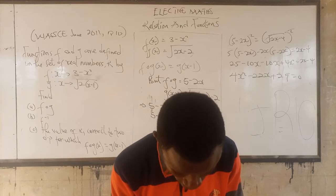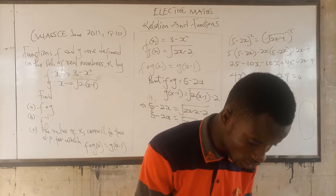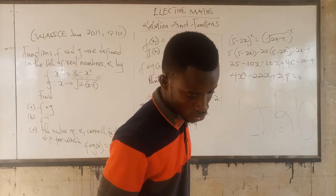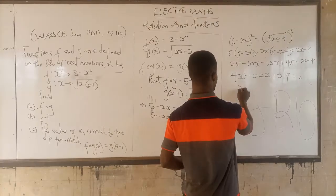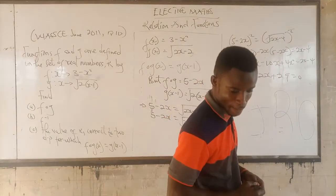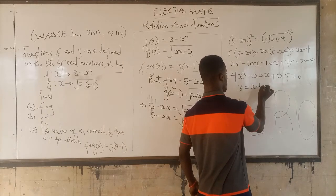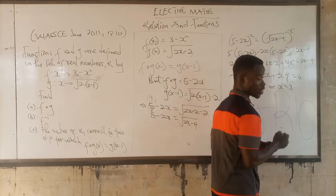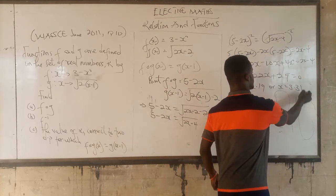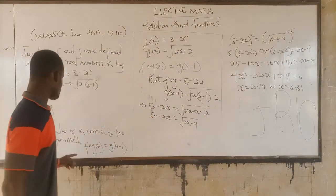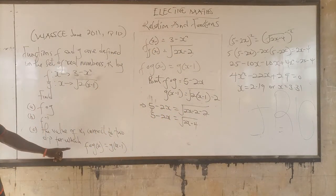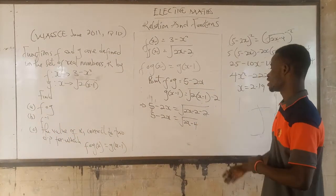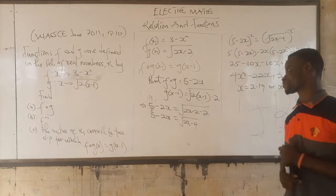Solving the quadratic equation is straightforward. We get x = 2.19 or x = 3.31. The question asks for the answer to 2 decimal places, so these are the final answers. Take your time, go through the video, pause if something is not clear, and play back if needed.